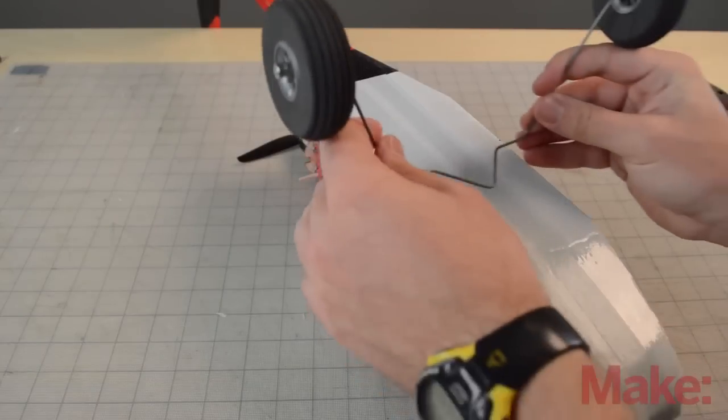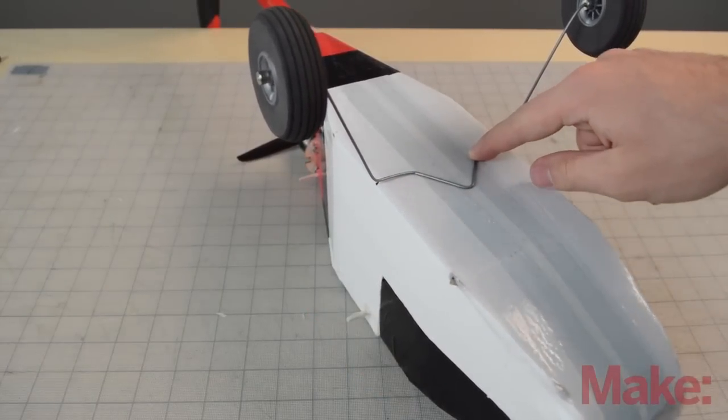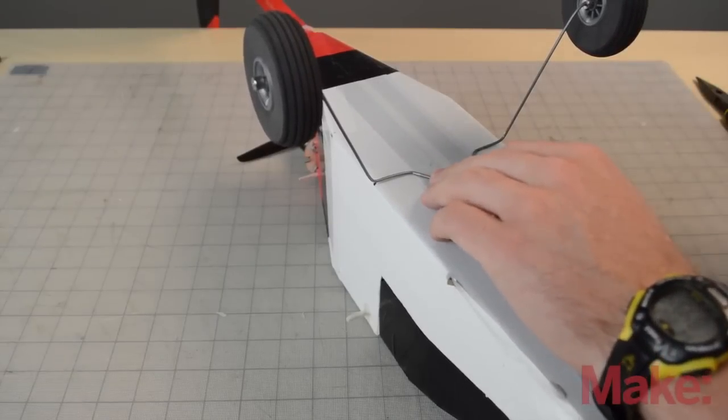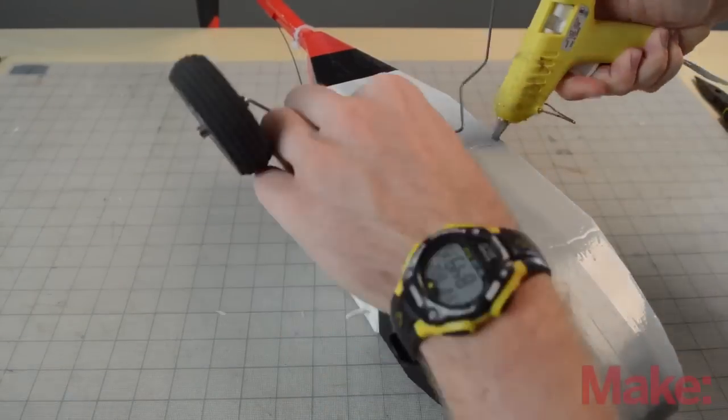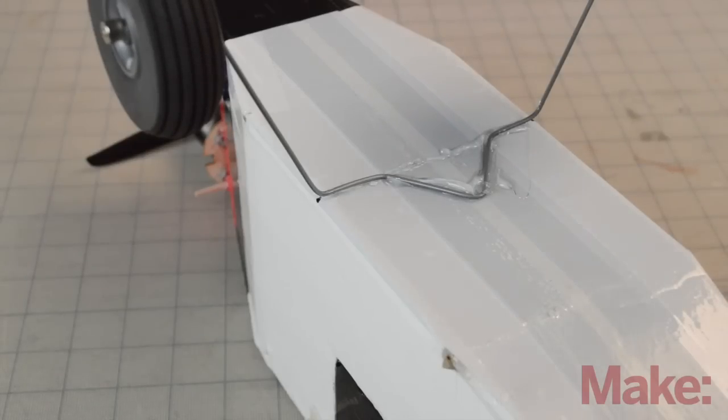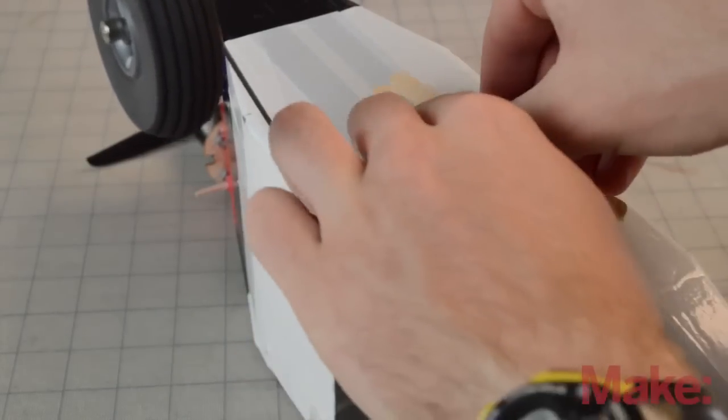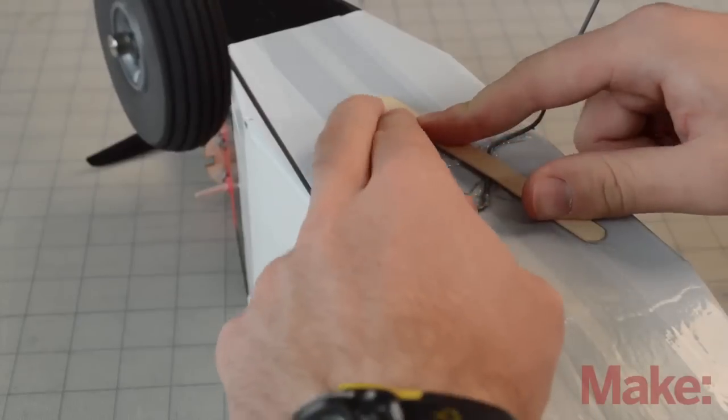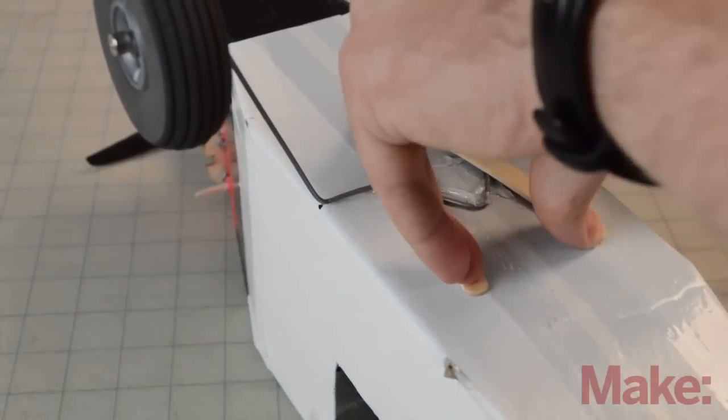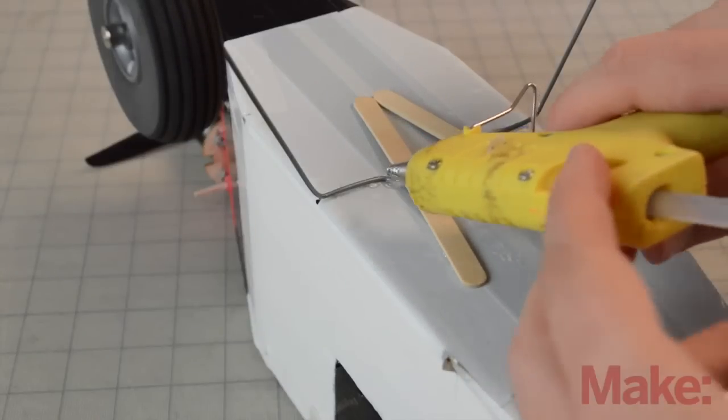Okay now we're going to get our landing gear and then we're going to place them on the mark with the triangle facing forward. Okay now that we have this here we're just going to hot glue it in place. Okay so to help it get a little bit more surface area we're going to add some popsicle sticks across these two joints going like this. I'm just going to hold them down until they dry.